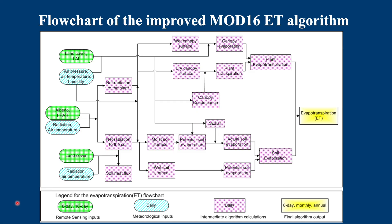Here is the flowchart of the MOD16 evapotranspiration algorithm. I will leave a link to the document in the description below this video. As you can see, it is quite comprehensive and includes remote sensing inputs shown in green, such as the leaf area index, and meteorological data shown in blue, such as air temperature and radiation. There are quite a few intermediate algorithm calculations shown in pink for plants, evapotranspiration, and soil evaporation, before the final output evapotranspiration shown in yellow.